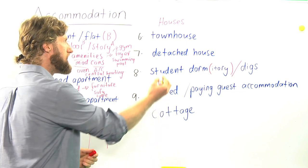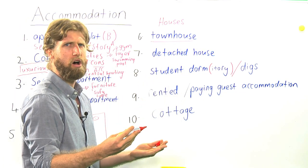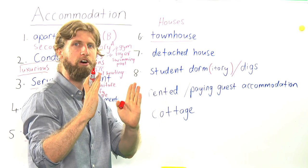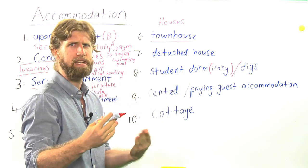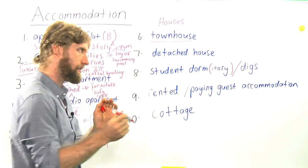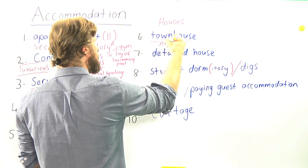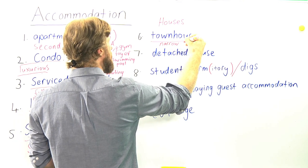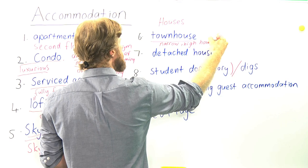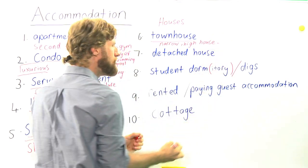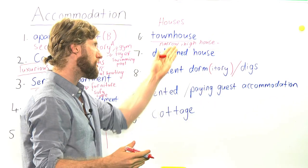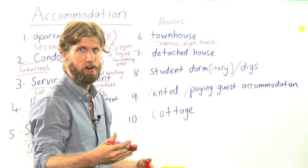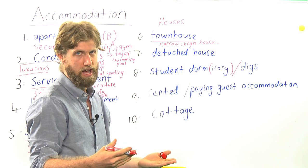We can find a townhouse. A townhouse is a tall, high, narrow house, and usually in places like London they are very close together. In places like Asia, you can also say: I am renting a room in a townhouse. Or, I am going to buy a townhouse.